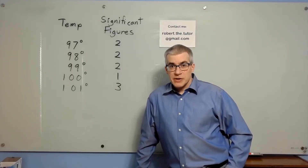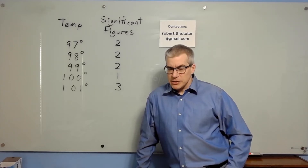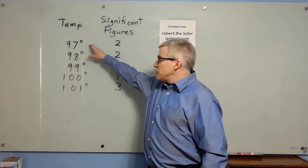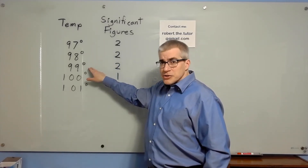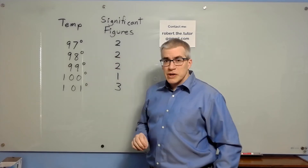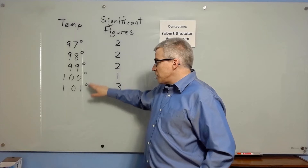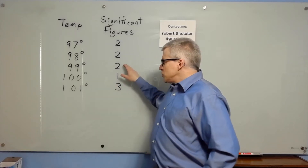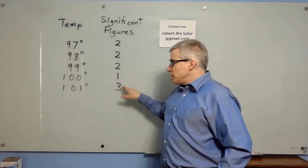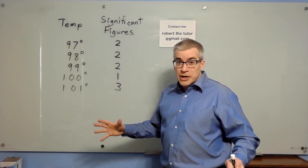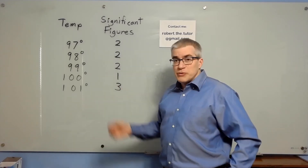When I first saw significant figures, I thought there's something wrong with this — this can't actually be right. Because I imagined: suppose you have 97 degrees, 98 degrees, 99 degrees — you're comparing them, they all have two significant figures. But if you've got 99 degrees, 100 degrees, 101 degrees, you've got two significant figures, then one, then three. You're trying to tell me that my precision just went haywire there? All I did was warm up a few degrees.